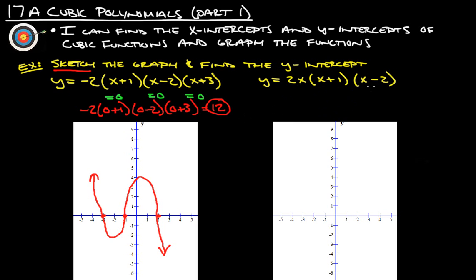Next one here, y equals 2x times x plus 1 times x minus 2. So again, we're going to make all these equal to 0 here. So 2 times what gives us 0? In this case, it's going to be 0. What plus 1 gives us 0? That's negative 1. And then what minus 2 gives us 0? And that's 2. So we have 3, our 3 intercepts are going to be at 2, negative 1, and 0. And this one's positive, so it ends up by going up. So I'm going to know it's going to end up going this way. Connect that down there. And again, we're just kind of roughly sketching it in here. And we actually can plug in the 0s for all the x's to figure out what the y-intercept is. But in this case here, you can actually see the y-intercept, which is at 0. So the y-intercept is at 0.